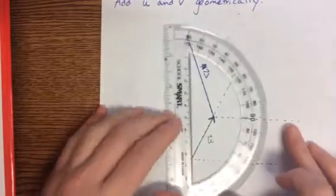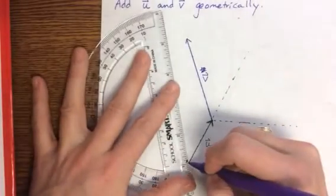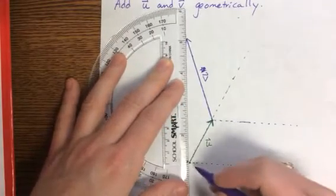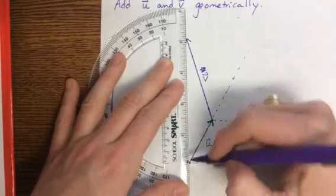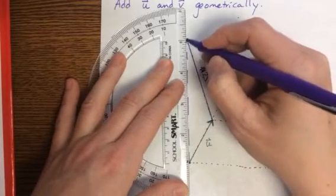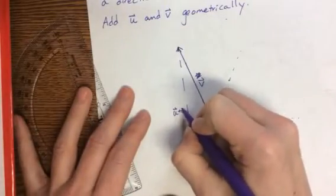And then I'm going to come through here and connect this. Sometimes our resultants are done with a dotted line. Not so much like these dotted lines, but anyway, this is the resultant vector. And so this would be vector u plus v.